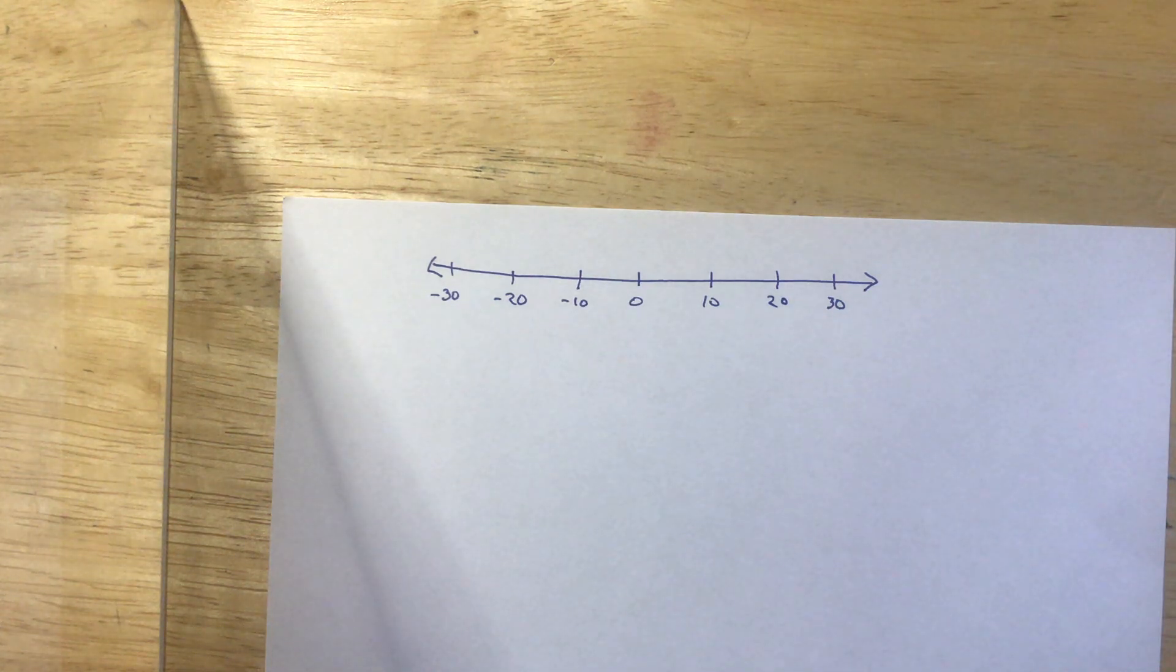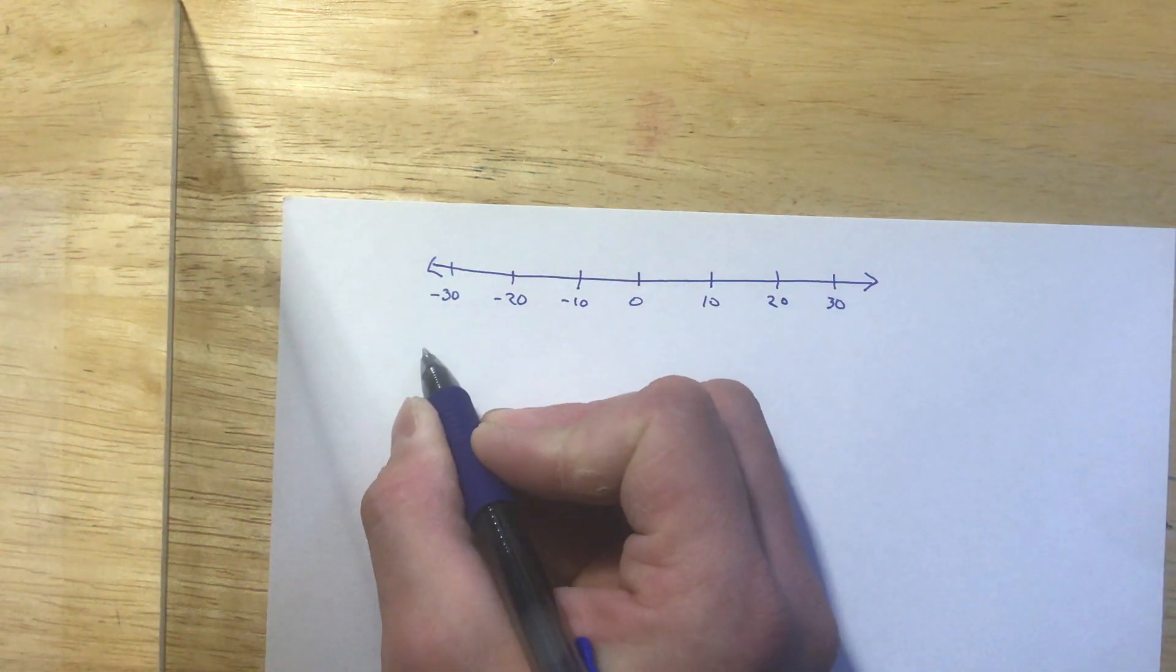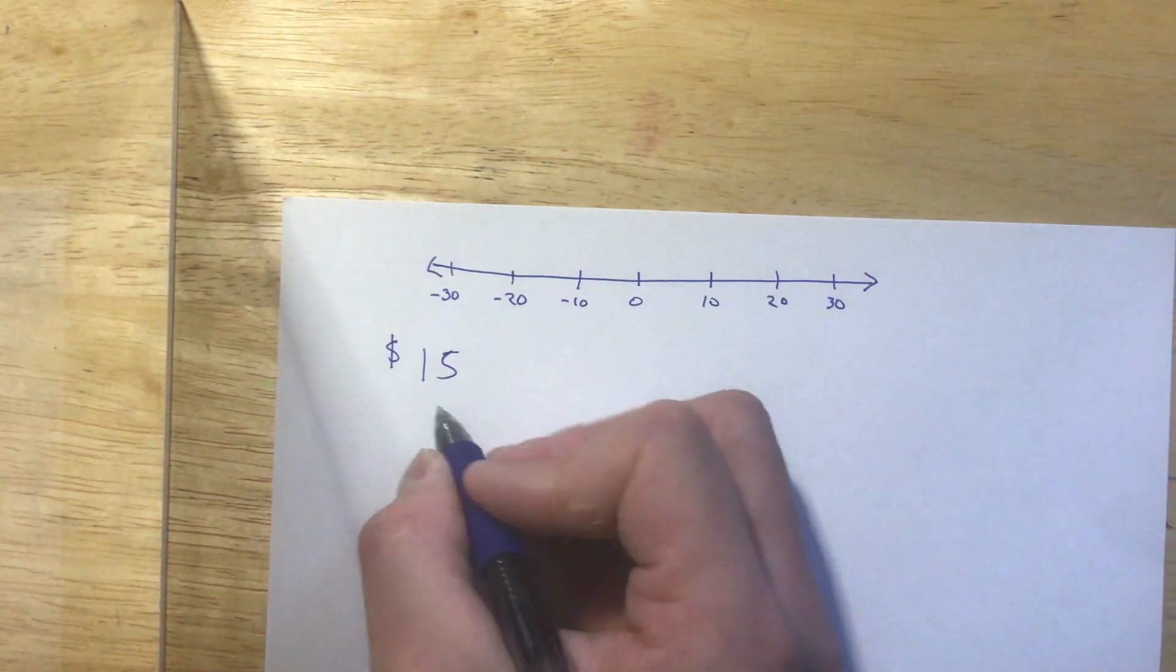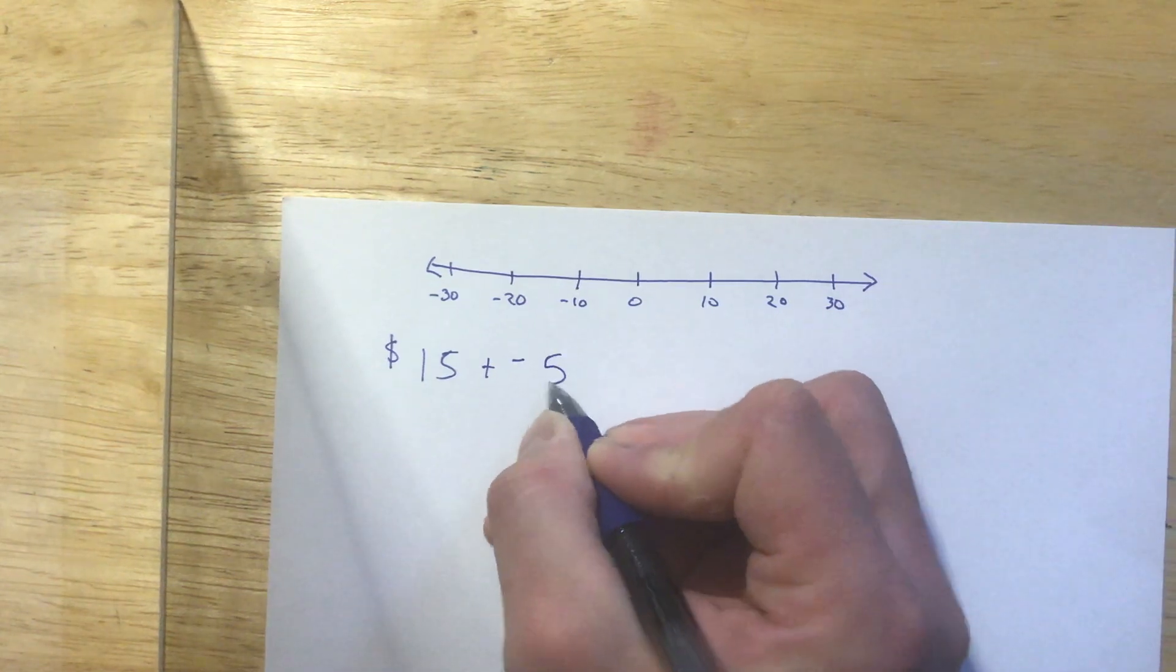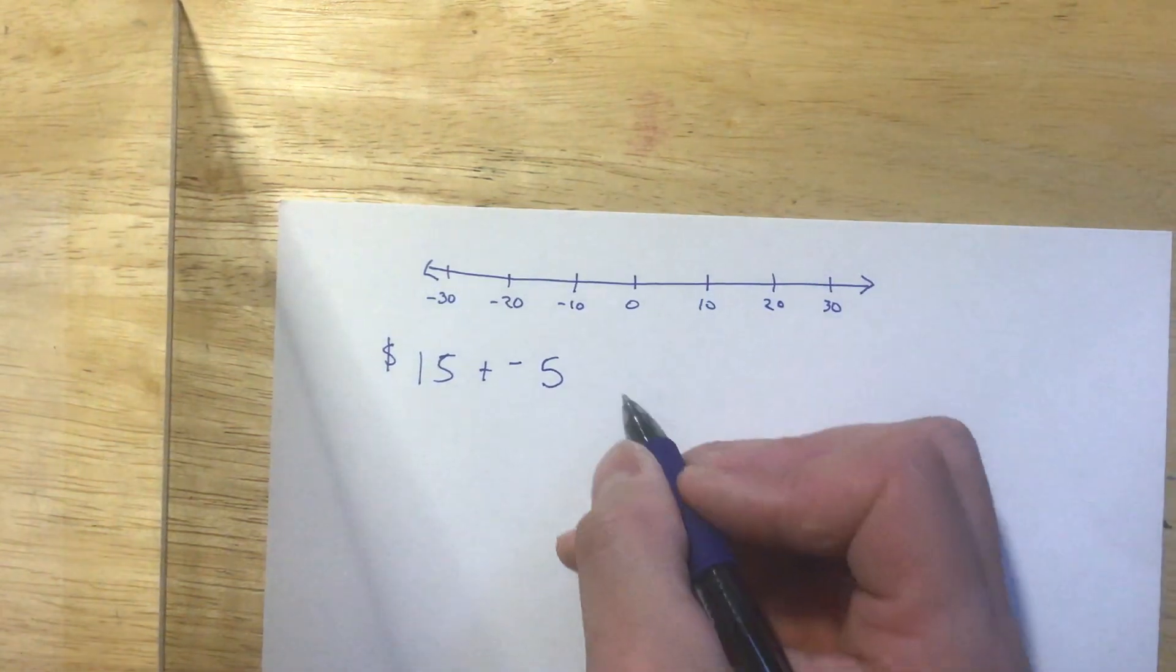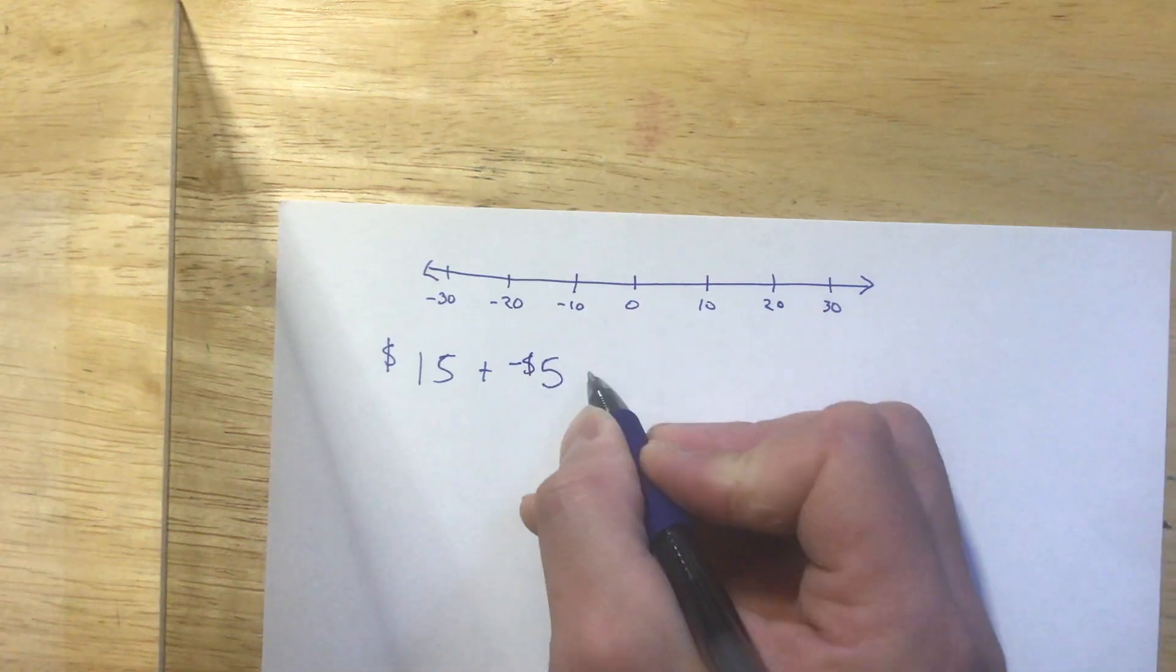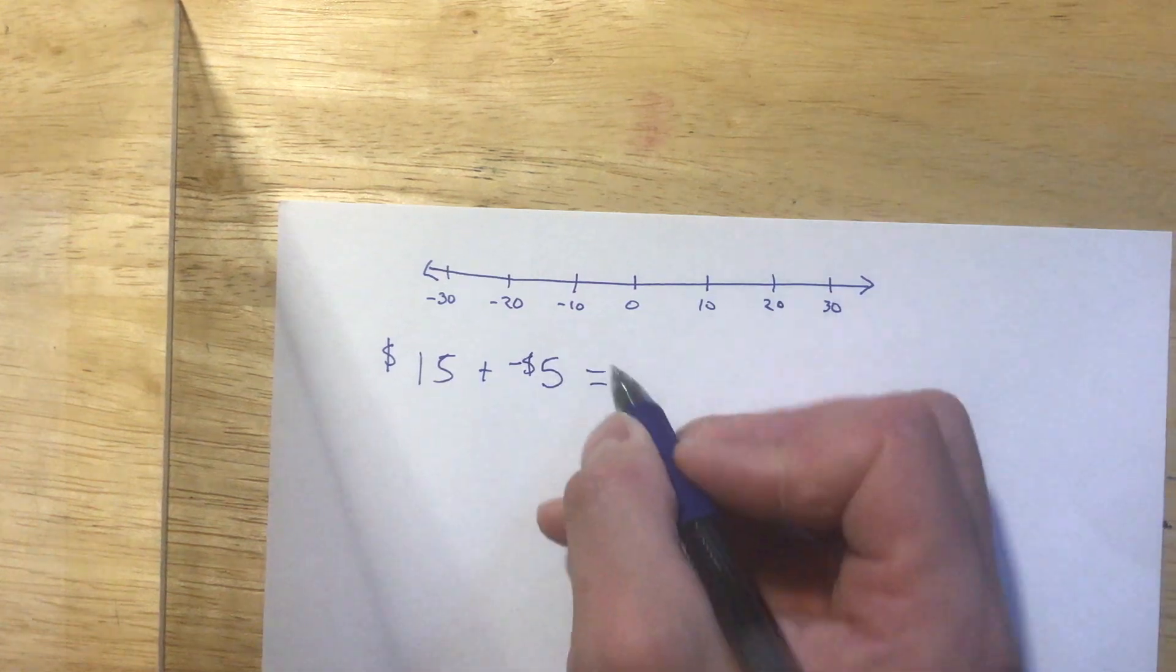We've done a lot with adding negative numbers. We talk about, you know, you have $15, but you owe $5 to your dad. As a dad, I like that idea. But you owe $5 to your dad. So what do you really have? Well, if I pay my dad off here, I have $10.